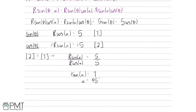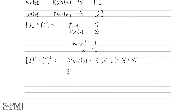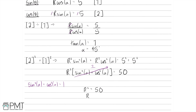Now let's find r by squaring and adding both equations. Equation 2 squared plus equation 1 squared gives r² sin² α plus r² cos² α equals 5² plus 5². Factorising out r²: r²(sin² α + cos² α) equals 25 plus 25, which is 50. Using the identity sin² α + cos² α equals 1, we get r² equals 50, so r equals √50, which simplifies to 5√2.